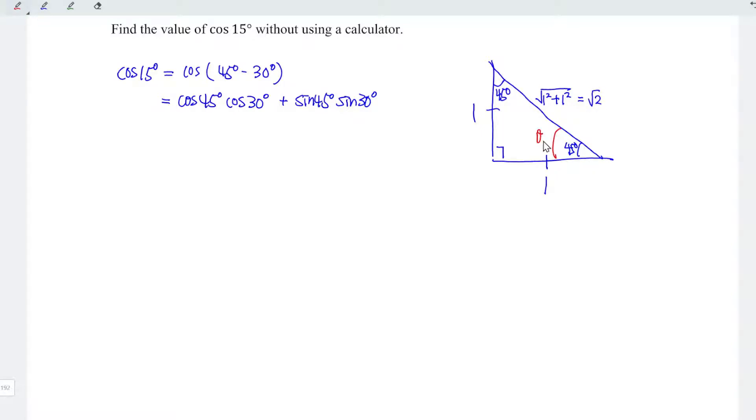The hypotenuse is here, since this is longest in length, and this is opposite of this angle. So we name it as opposite, and this is adjacent. By using the trigonometric ratio, we know that cos θ equals adjacent over hypotenuse, and sin θ equals opposite over hypotenuse.